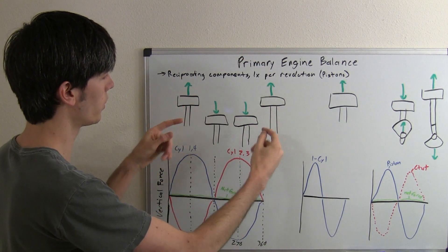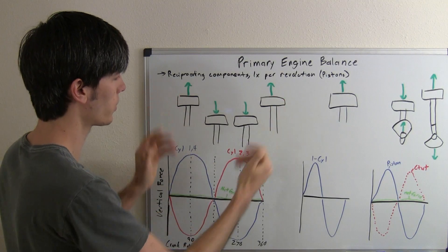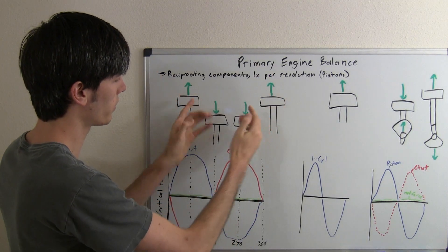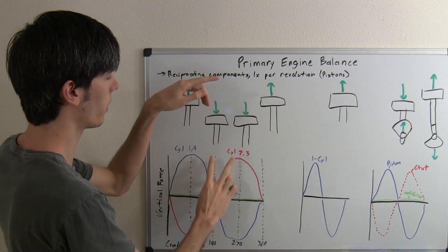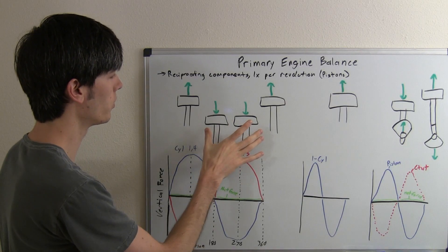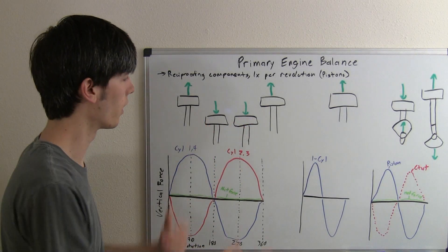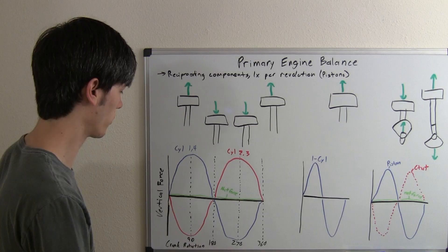In a four cylinder engine you're going to have two pistons, the ones on each end, going up while two pistons in the center are going down and then that will reverse. And the reason you do this is to balance out the inertia of these pistons.